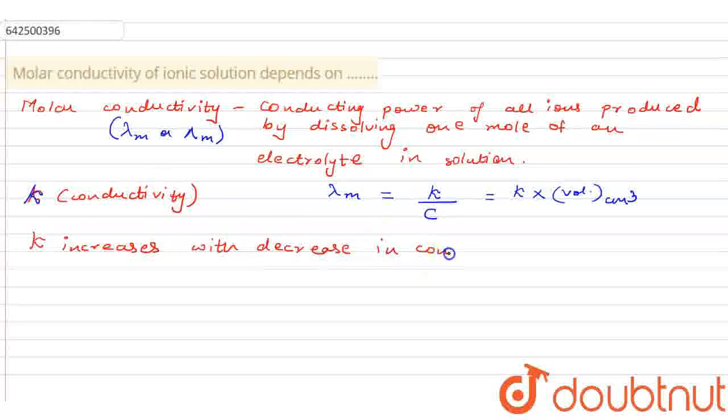Now, why does decrease in concentration increase the conductivity? Because the number of ions would be more. What happens on dilution, you know, the number of ions per unit volume decreases on dilution.